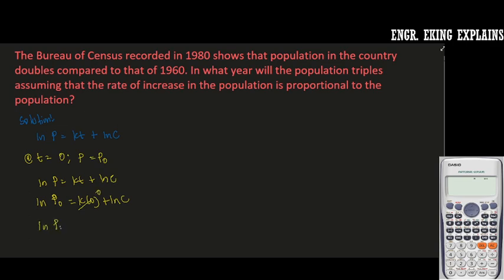So you now have ln P0 is equal to ln C. This is on 1960.